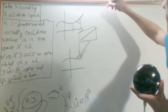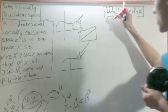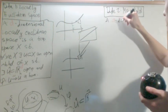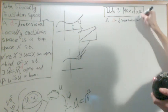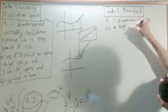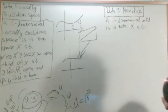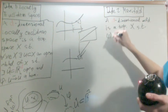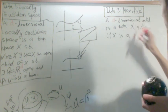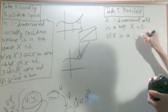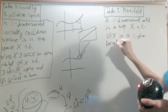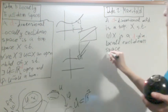That's the idea behind a locally Euclidean space. And now, a manifold, a d-dimensional manifold is a topological space X such that one, X is a d-dimensional locally Euclidean space.